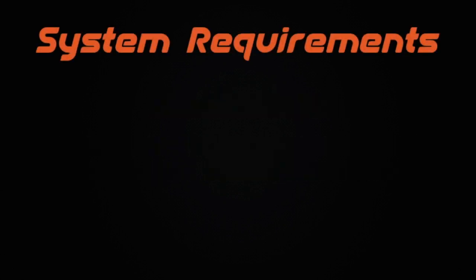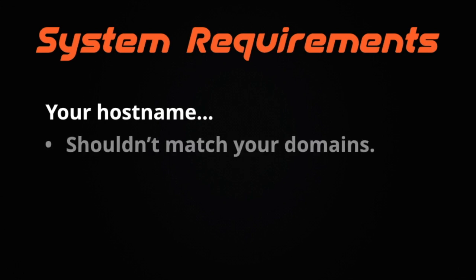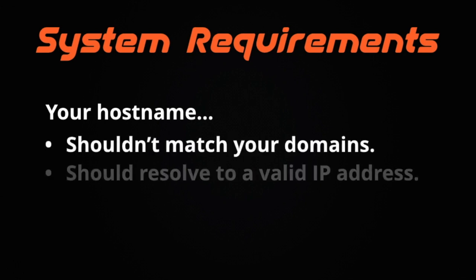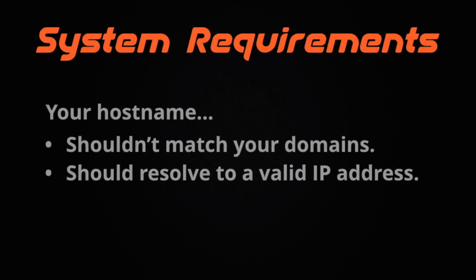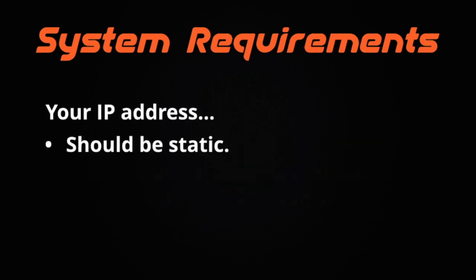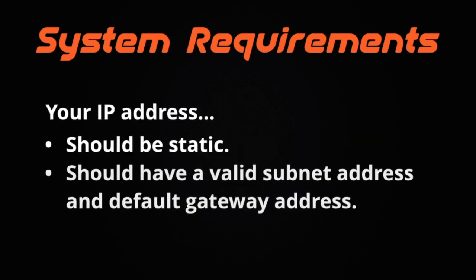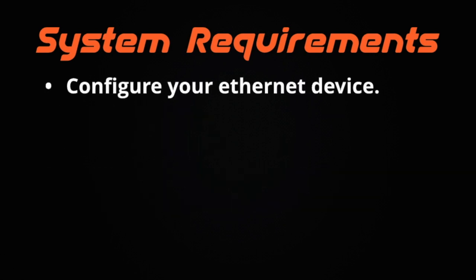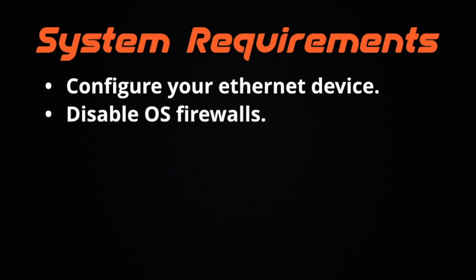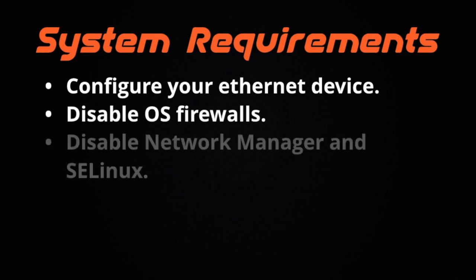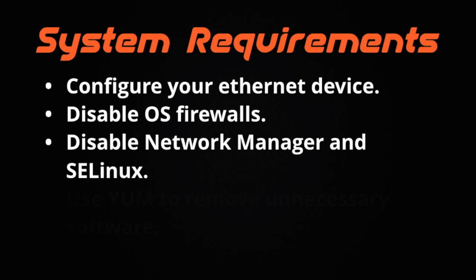Before you can start installing, you need to make sure that your system meets all of our system requirements. Your hostname shouldn't match any of your server's domains, and it should resolve to a valid IP address. That IP address should be static, and you should have a valid subnet address and a default gateway address. You'll also need a one-to-one NAT configuration if your server's on a NAT-configured network. You're also going to need to configure your Ethernet device, disable any operating system firewalls, and disable the Network Manager service and SELinux.